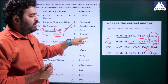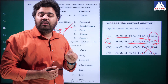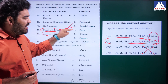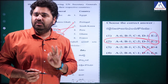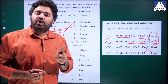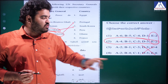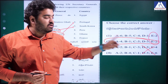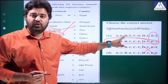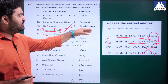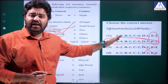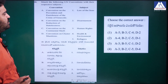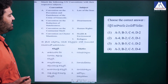This is the way to use the elimination method for match-the-following type questions. Even partial knowledge — knowing just one or two correct pairs — is enough to eliminate incorrect options and arrive at the right answer. We will apply this same logic to the next question as well.